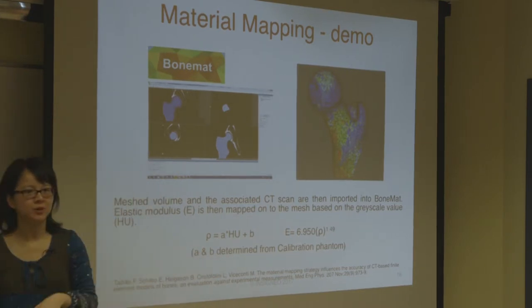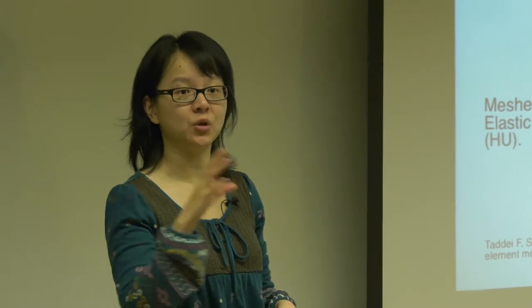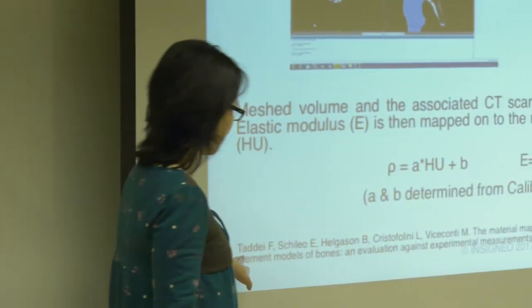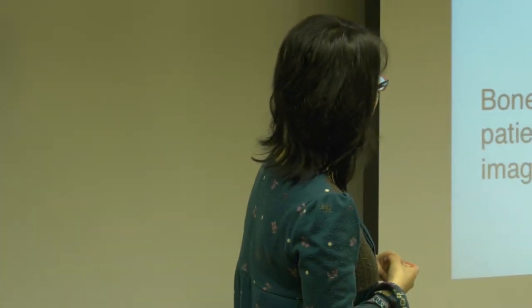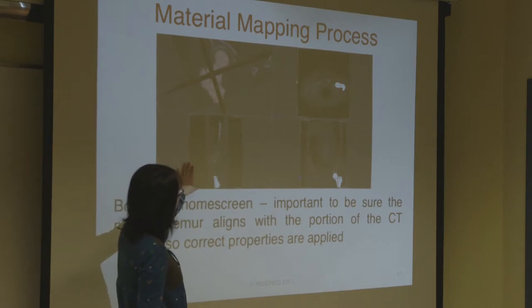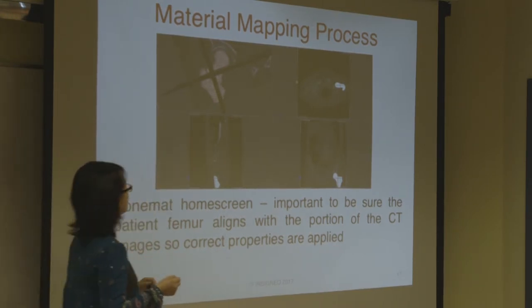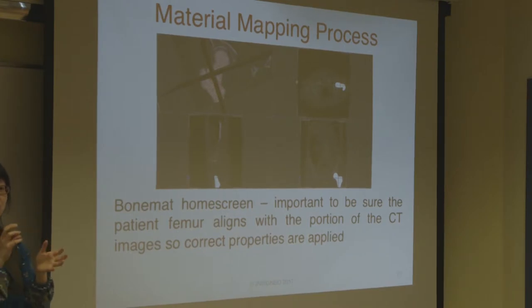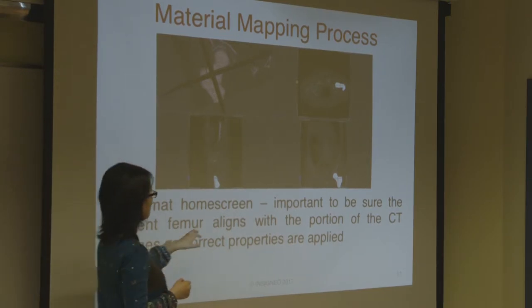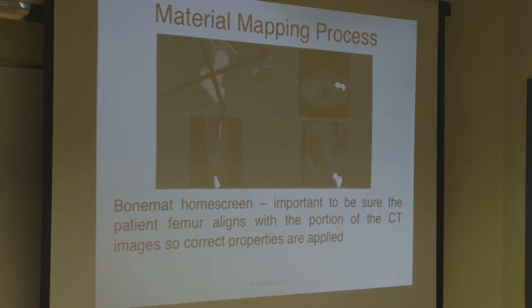If you're interested in the whole procedure of how you convert attenuation level to Young's modulus, there's a paper by Taddei from the Bologna group. They've done a whole range of experiments on cadaver bones to get the different parameters needed to convert density values. Before you estimate mechanical properties, you need to make sure you have a good alignment between your FE mesh and your CT scan; otherwise, you will be estimating material properties based on an area of CT that does not represent your bone.